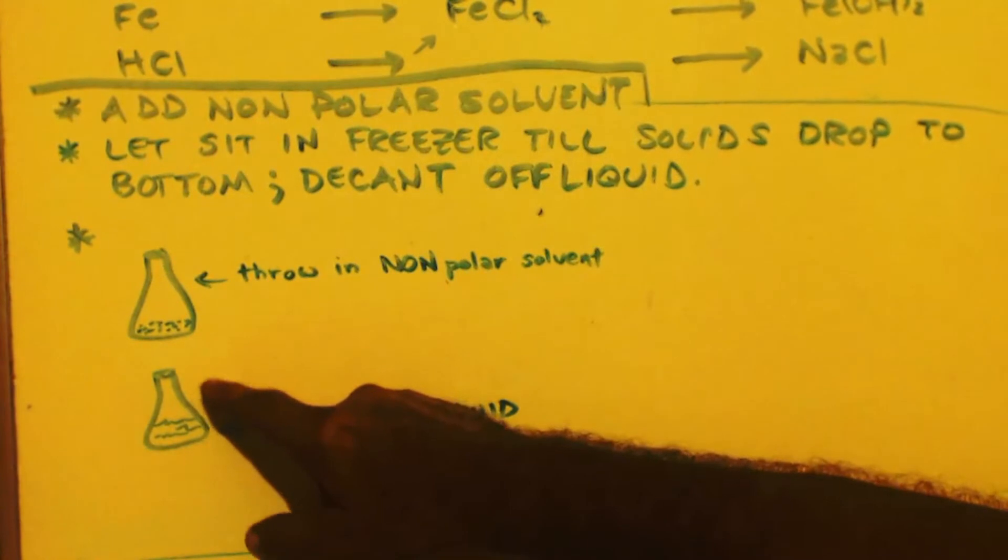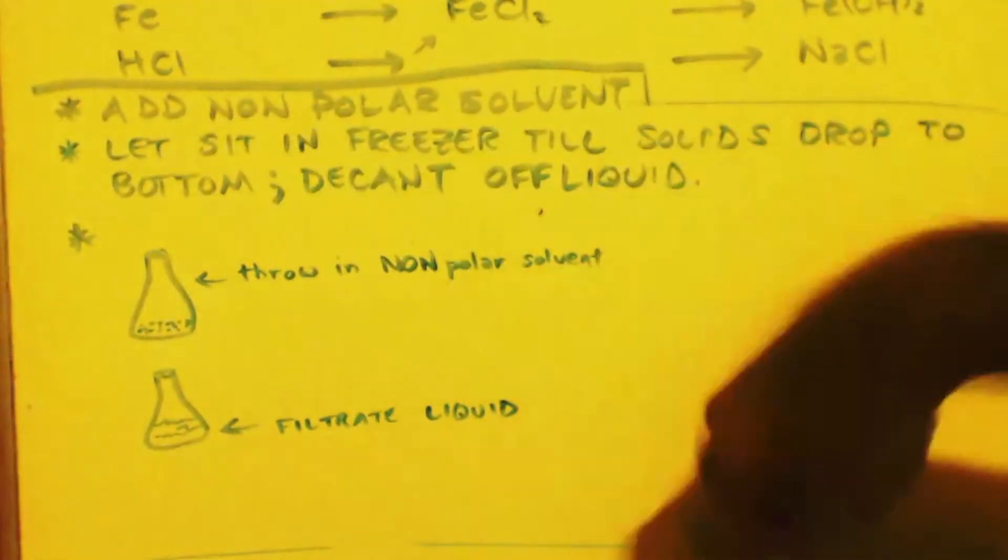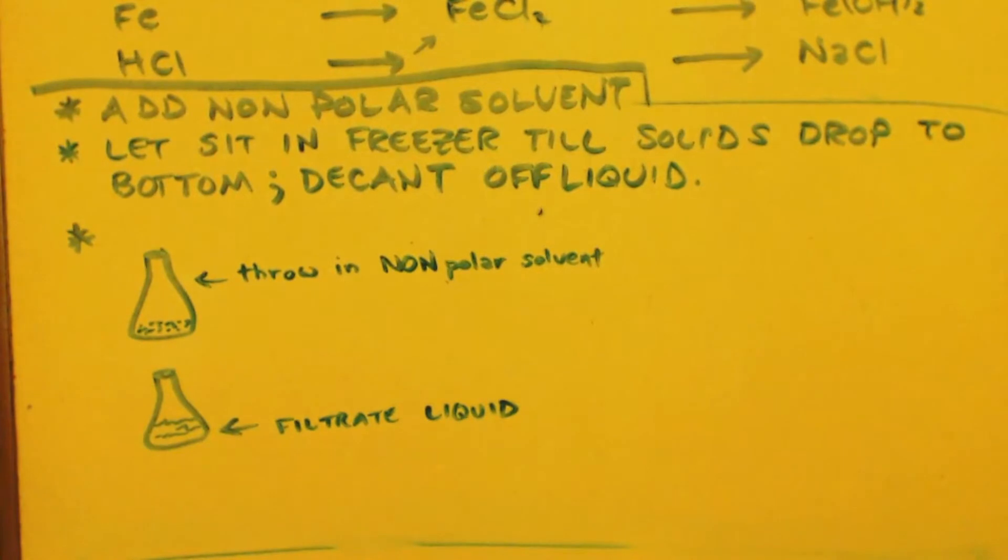Then decant it out into your mother liquor. And put some more non-polar solvent in there. Grab it and shake it up. Cover it back up, put it in the freezer. Repeat that process like three or four times.